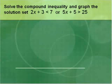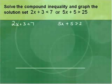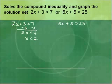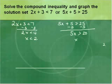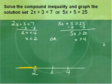Last, we solve an OR compound inequality: 2x + 3 < 7 or 5x + 5 > 25. Subtracting 3 from both sides gives 2x < 4, so x < 2. Subtracting 5 from both sides of the second gives 5x > 20, so x > 4. So x < 2 or x > 4. On the number line: open circle on 2, numbers to the left; open circle on 4, numbers to the right.